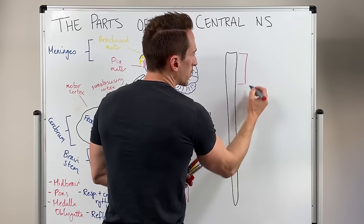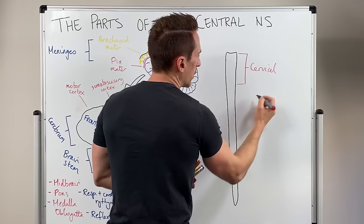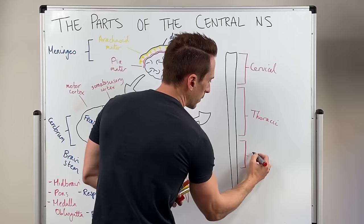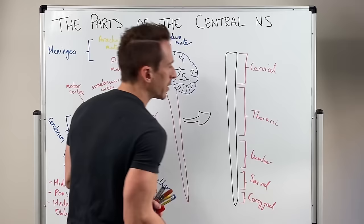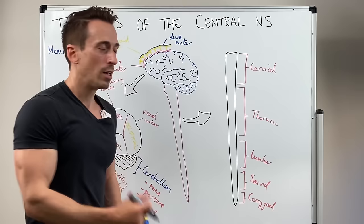You've got the cervical, you've got the thoracic, the lumbar, the sacral and the coccygeal. These are the various regions of our spinal cord and there's neurons that shoot out and away and back in.